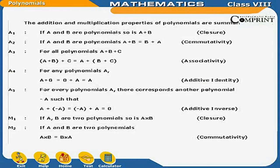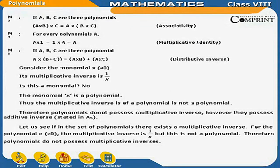A5 — for every polynomial A, there corresponds another polynomial minus A such that A plus (minus A) equals zero (additive inverse). M1 — if A and B are polynomials, so is A×B (closure). M2 — A×B equals B×A (commutative). M3 — (A×B)×C equals A×(B×C) (associativity). M4 — A×1 equals 1×A equals A (multiplicative identity). M5 — A×(B plus C) equals A×B plus A×C (distributive property).